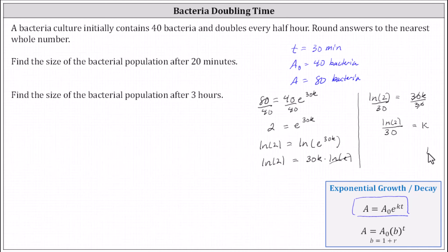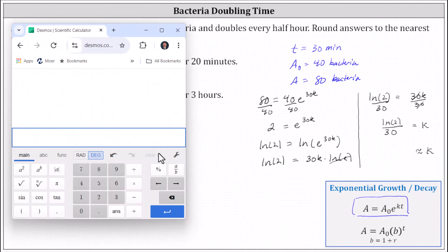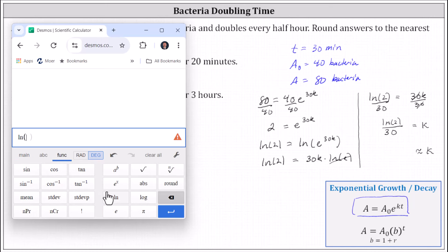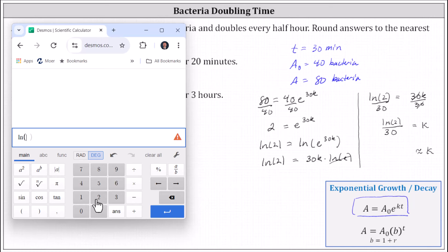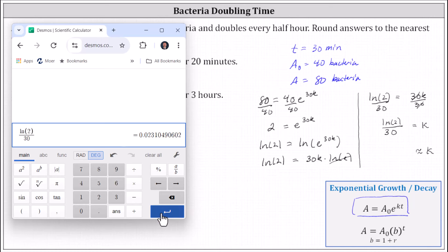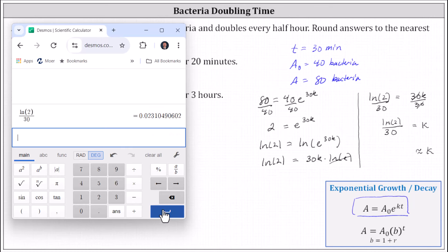Let's also get a decimal approximation for k. Using the Desmos Scientific Calculator, we press the functions tab, click natural log, go back to the main tab, enter two, close parenthesis, divide by 30, and press enter. We need to be careful when rounding k — we should include quite a few decimal places to reduce the margin of error. Using an approximation for k, we would use something like 0.023105.